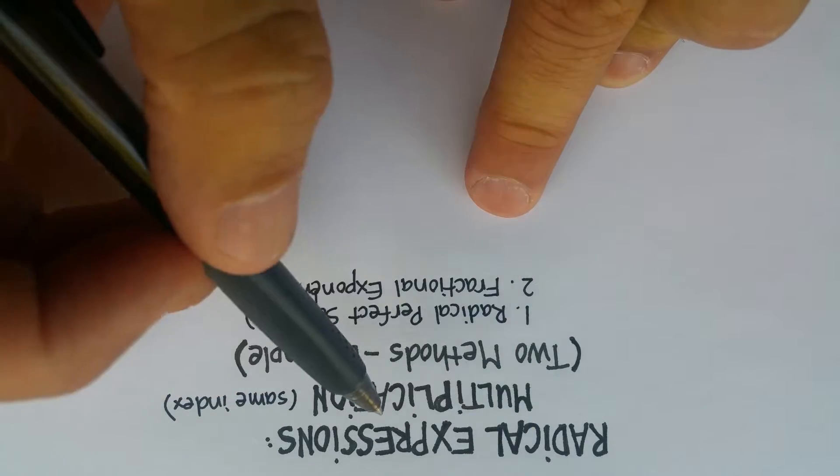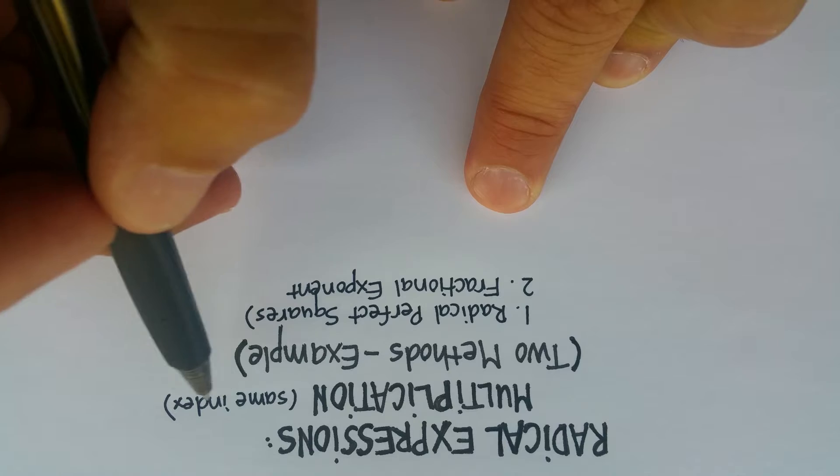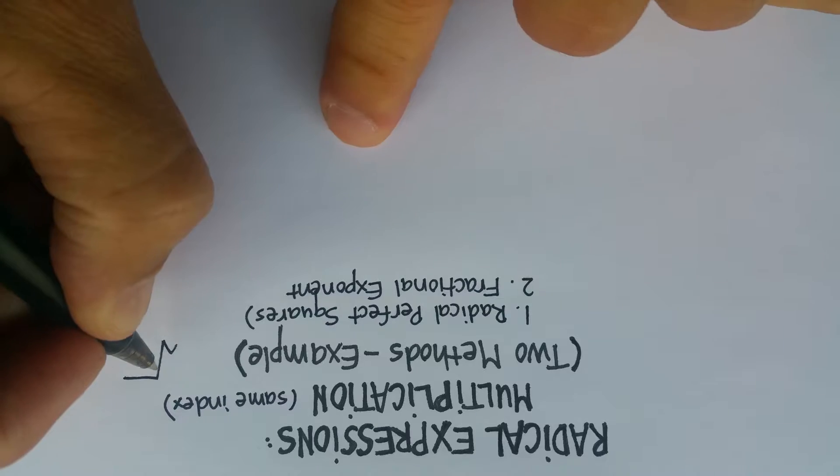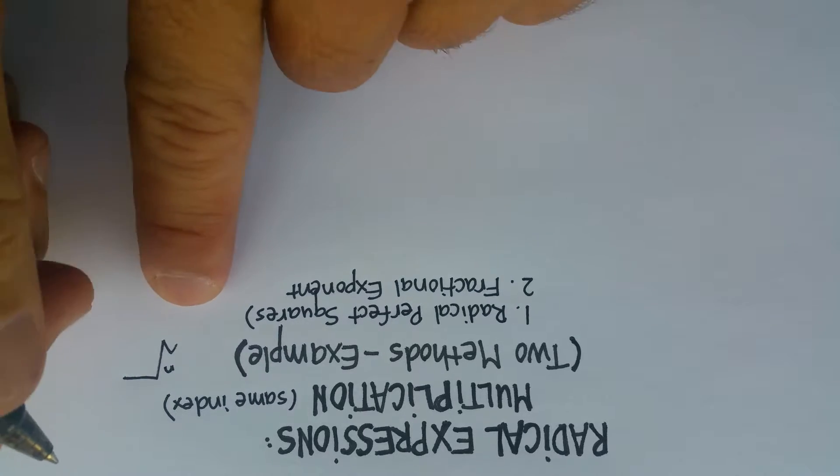In this video, we're going to go over how to multiply radical expressions that have the same index. And remember that the index is the number that's up here. It tells you which root you're trying to find.